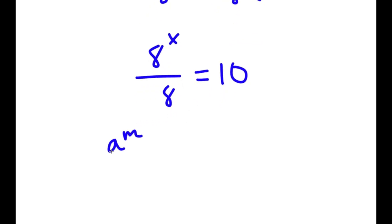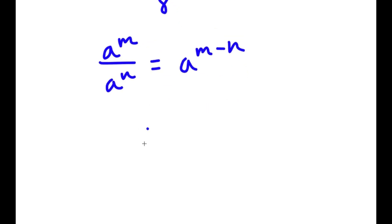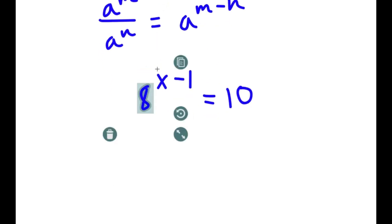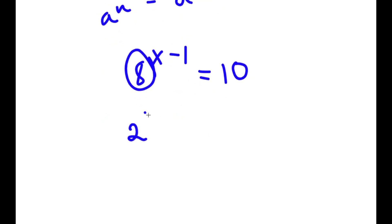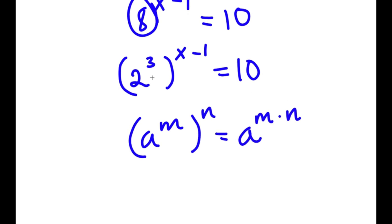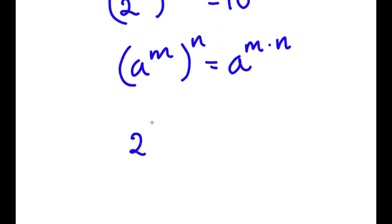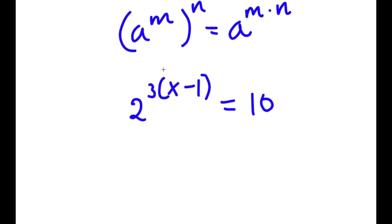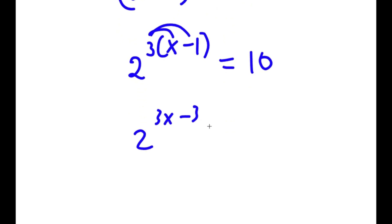If I have something in the form a to the power of m over a to the power of n, this equals a to the power of m minus n. So 8 to the power of x over 8 to the power of 1 equals 8 to the power of x minus 1, which equals 10. Now 8 is the same as 2 to the power of 3, so I have 2 to the power of 3 to the power of x minus 1 equals 10. Using the rule a^m^n = a^(m×n), this becomes 2 to the power of 3x minus 3 equals 10.